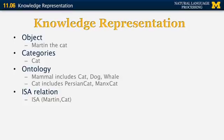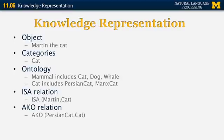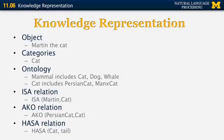Now we can define two relations. The is-a relation, which is between an object and a category — so we can say that Martin is a cat, where Martin is an object and cat is a category. We can also define a relation AKO, which stands for 'a kind of', defined between two different categories — so Persian cat as a category is a kind of cat. Other relations that can be defined include has-a, also known as a Meronymy relation. For example, has-a cat tail means that all objects in the category cat have tails.